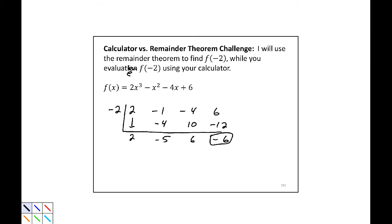Now let's see if that was any quicker. 2 times negative 2 cubed minus negative 2 squared minus 4 times negative 2 plus 6. Negative 6. Same result.